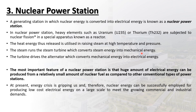The steam runs the steam turbine which converts steam energy into mechanical energy, and the mechanical energy drives an alternator to produce electrical energy. The most important feature of a nuclear power station is that a huge amount of electrical energy can be produced from a relatively small amount of nuclear fuel as compared to other conventional types of power stations. Nuclear energy can be successfully employed for producing low-cost electrical energy on a large scale to meet growing commercial and industrial demand.